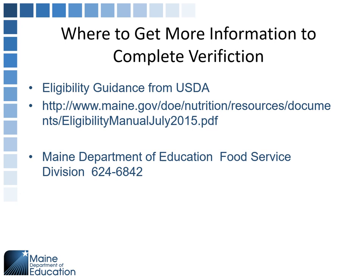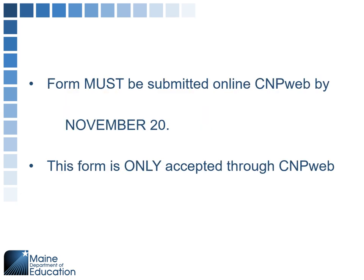Eligibility guidance is on the web page under the application approval tab. It's an older manual but still effective and valid — the information has not changed. You can call the office and ask for Paula, who will direct you to the best available person. Email or call David Hartley with questions. The verification summary form must be completed online in CNPweb by November 20th — that's the only accepted method. Don't print off the report and send it in; it will be returned as incomplete.